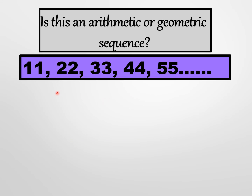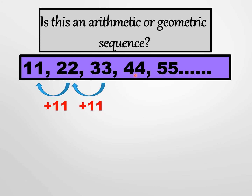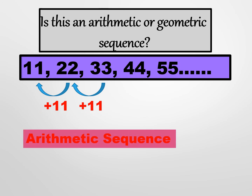Another example: 11, 22, 33, 44, 55, and so on. The increase is gradual, so let's verify. 22 minus 11 equals 11; 33 minus 22 equals 11; 44 minus 33 equals 11; and 55 minus 44 equals 11. Since we have a common difference of 11, this is an arithmetic sequence.